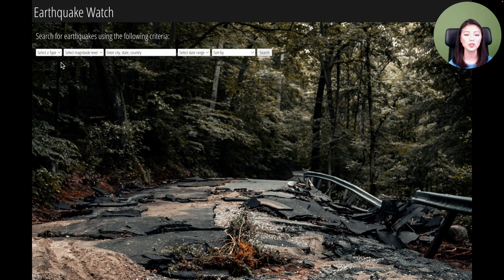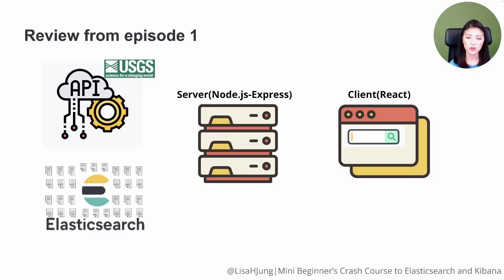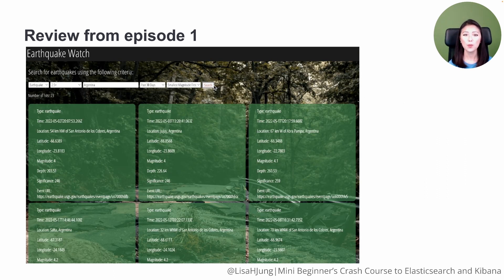So let's do a review of what we'll build. Our client allows the user to search for earthquakes based on quake type, magnitude, location, and date range. It also allows the user to sort the search results by ascending or descending order of magnitude. When the user hits the search button, the user input is sent to the server via HTTP request. The server passes the user input into an Elasticsearch request and sends it to Elasticsearch. Elasticsearch retrieves relevant documents and sends them to the server, which then sends the documents to the client. The client displays the results in the form of cards, and each card contains information about one earthquake.